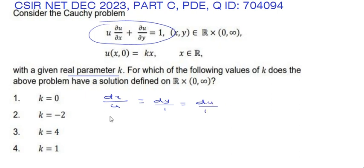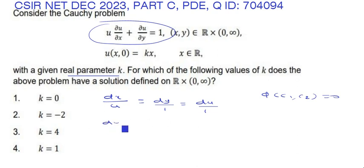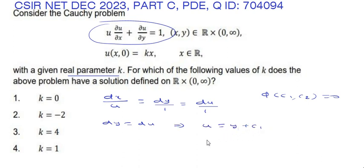We need to find two invariant functions c1 and c2 such that φ(c1, c2) = 0. Taking the last two ratios, dy = du, which implies u = y + c1, that is, u − y = c1.